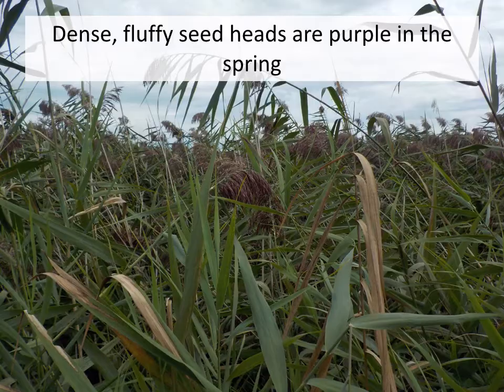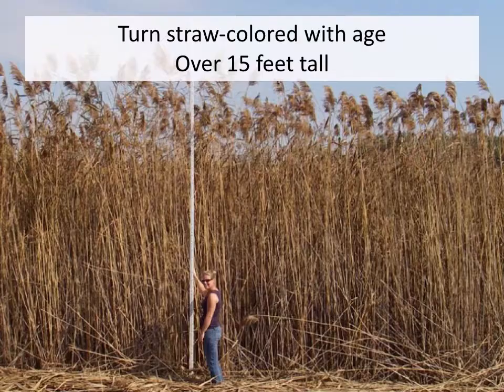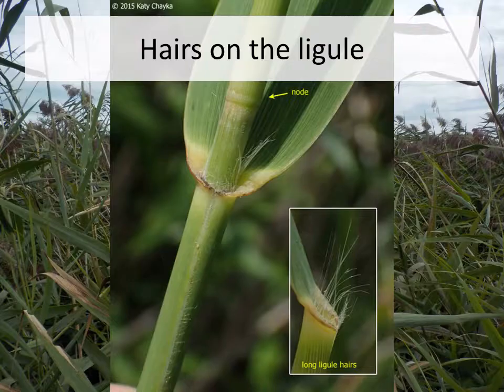Phragmites has a dense, fluffy seed head that is purple in the spring. In the fall, the seed head turns straw-colored, followed by the leaves and the stems of the plant, and they remain standing like that over winter. In areas like the Saginaw Bay, the stalks reach heights of over 15 feet tall. When you pull back phragmites leaves, you will see small hairs on the ligule — this is important to remember during the lookalike species discussion.